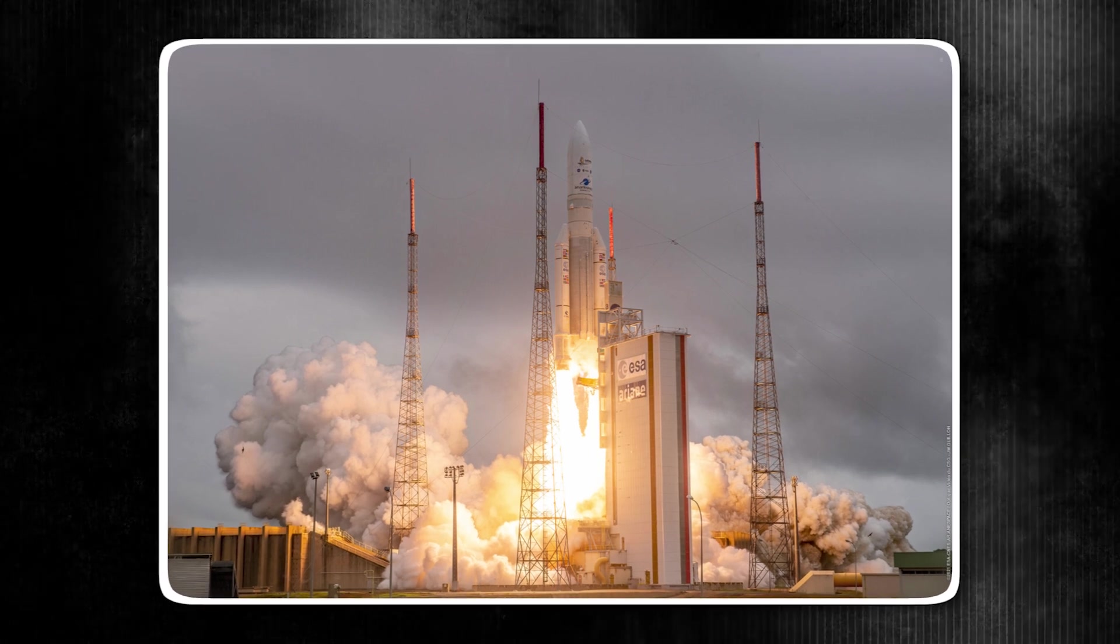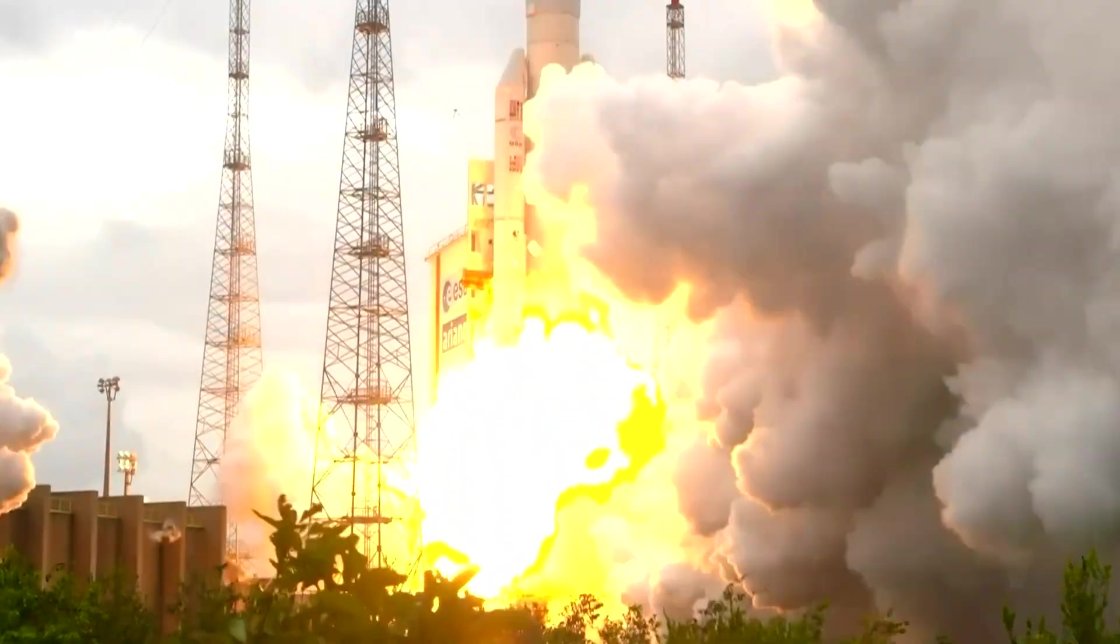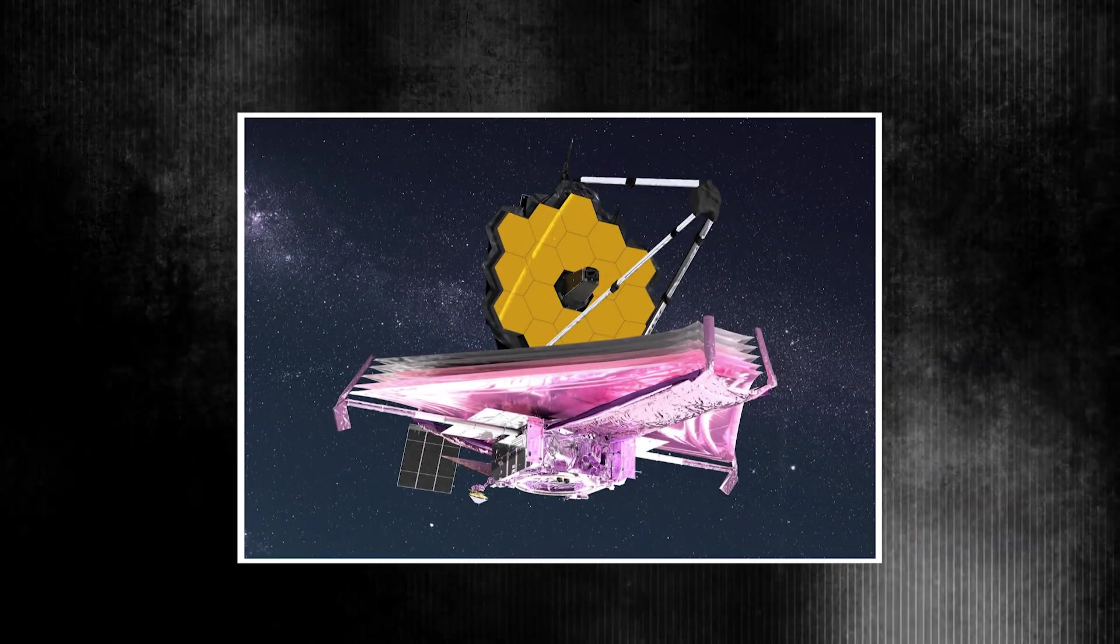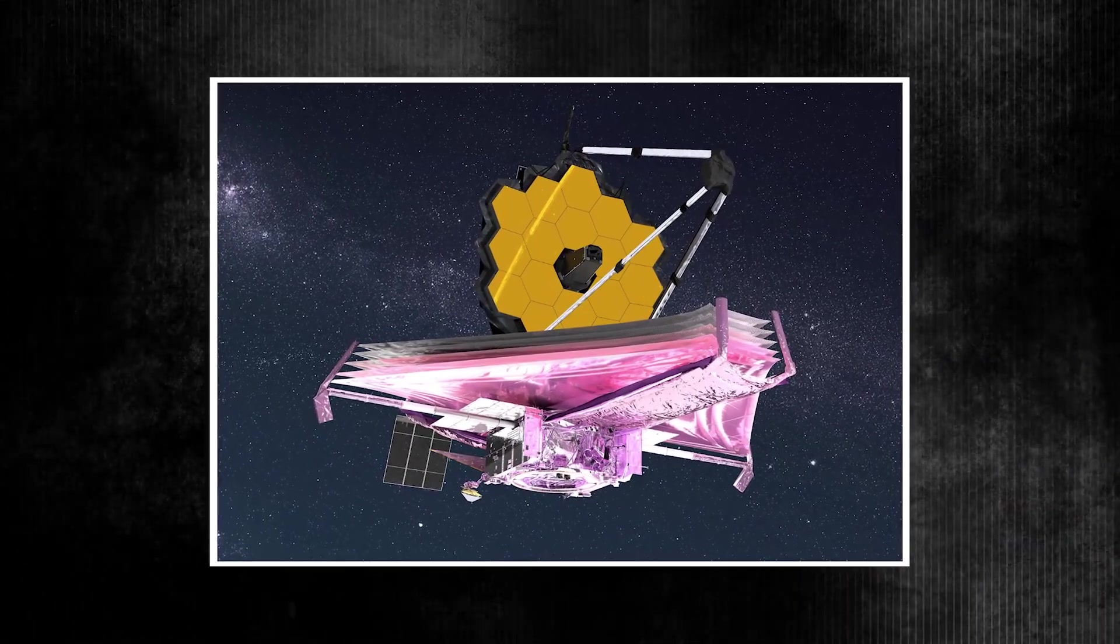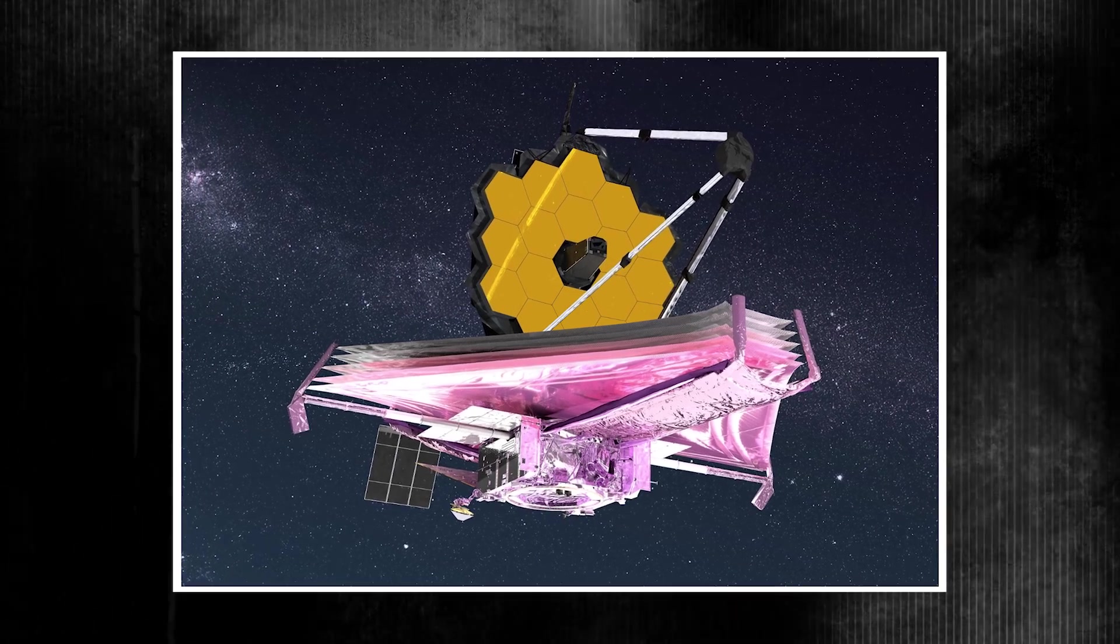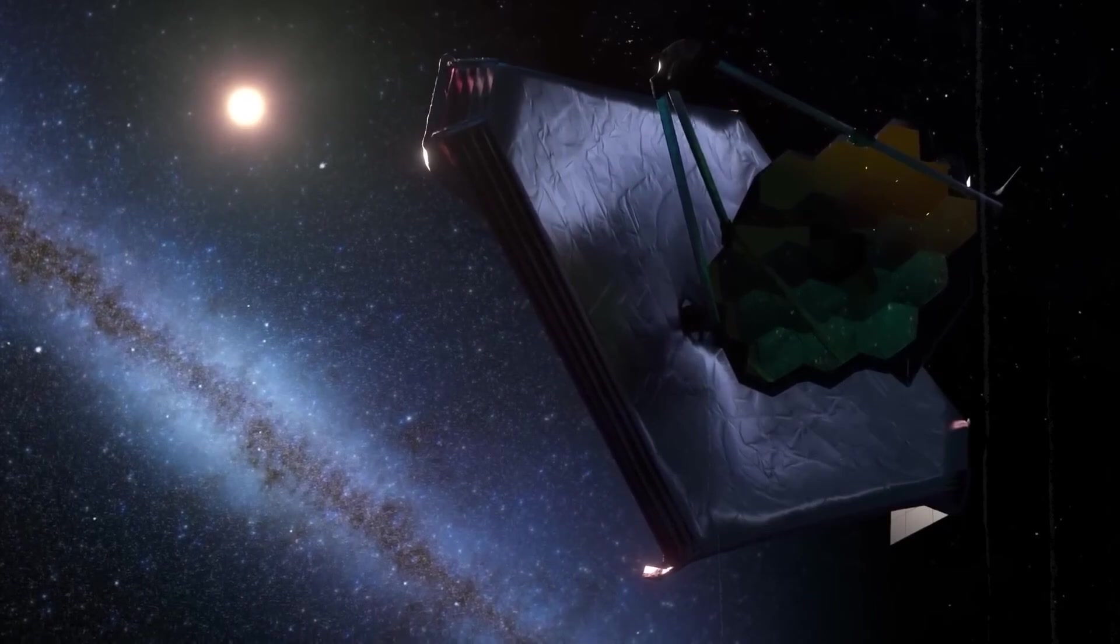Since then, the telescope has spent months unfolding, activating its systems, and testing its components. This 6,500-kilogram engineering marvel features a sunshield with dimensions comparable to a tennis court, 14 by 21 meters, and a light-collecting mirror six times larger in area than Hubble's. This expansive mirror enables it to capture more photons, producing sharper images of distant cosmic phenomena.